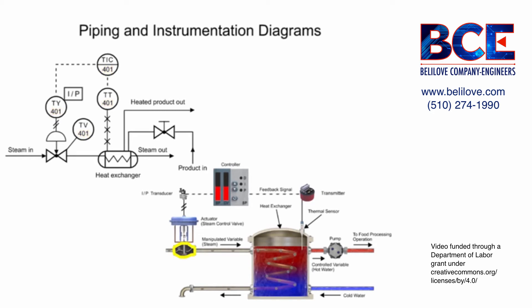The valve that allows steam to flow through the pipe is the symbol with two triangles.